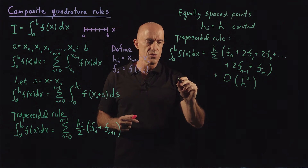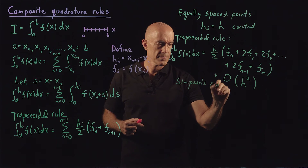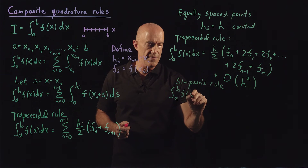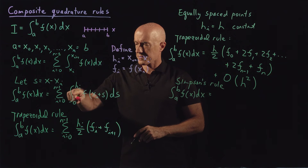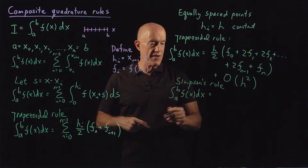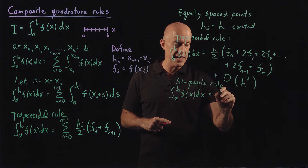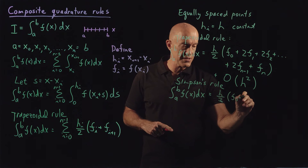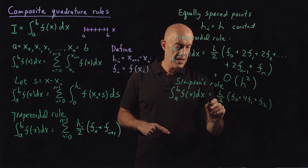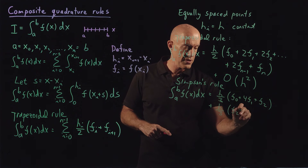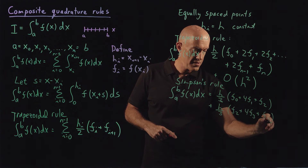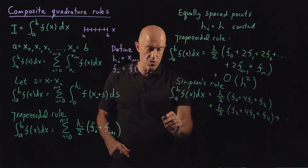Another nice rule is Simpson's rule. For the composite Simpson's rule, we apply the elementary formula over each 2h interval. So we would have h over 3 times (f₀ plus 4f₁ plus f₂), then another h over 3 times (f₂ plus 4f₃ plus f₄), and we keep going.